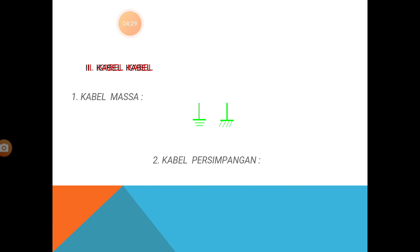Untuk kabel: ada kabel masa, ini yang berwarna hijau. Ini simbol masa — ada garis mendatar, terus ada garis ke atas, di bawahnya ada arsiran garis-garis. Ini simbol masa.